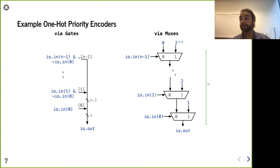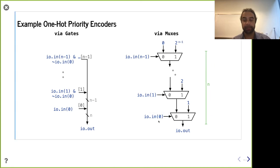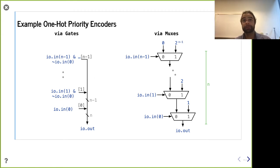There's a question about clarifying 'lowest' vs. MSB. When I say lowest, we're talking about index zero — the least significant bit, the LSB. The MSB is at the other end. The choice was made for this priority encoder to give priority to the least significant bit. You can imagine a priority encoder in the reverse direction where the highest bit wins. But in this case, we're doing the lowest index — so the lowest index wins.